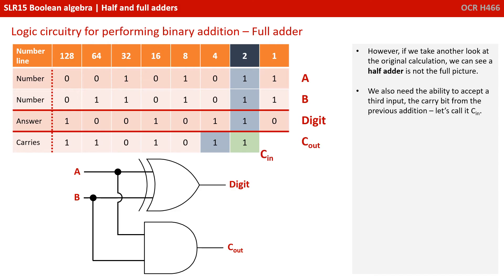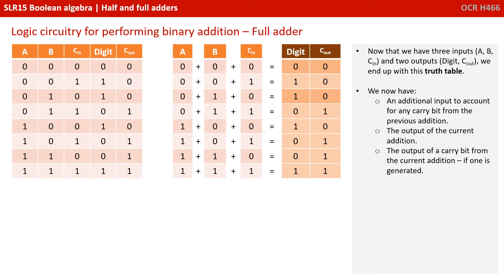However, if we take another look at the original calculation, we can see a half-adder is not the full picture. We also need the ability to accept a third input — that's the carry bit from the previous addition. Let's call it CIN. Now that we have three inputs, A, B and CIN, and two outputs, digit and COUT, we've ended up with this truth table.